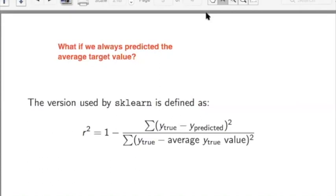Another situation: what if we always predicted the average target value? We just took the average value of the true y-values in our training set and always returned that as the prediction. Then this y-predicted would become average y-true value, and you would actually see the numerator and the denominator becoming the same thing.